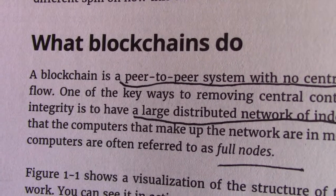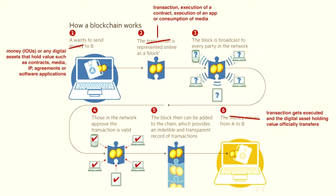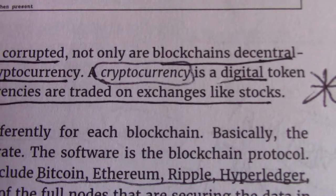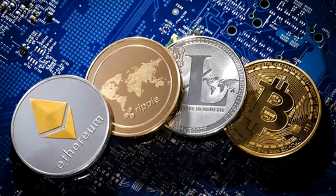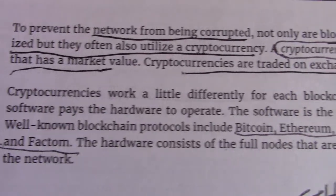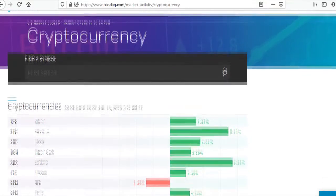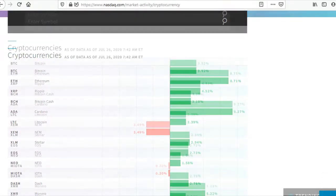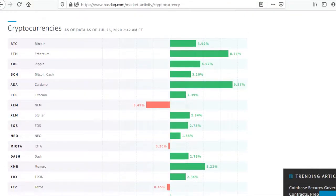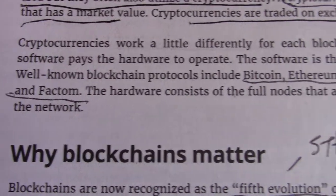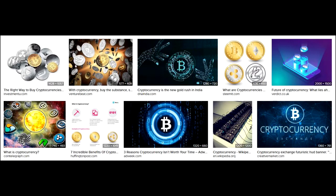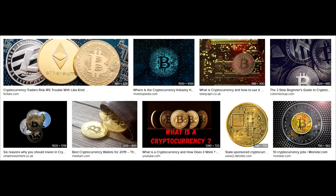What blockchains do. A blockchain is a peer-to-peer system with no central authority — that's very important. A cryptocurrency is a digital token that has a market value. Cryptocurrencies are traded on exchanges like stocks. Well-known blockchain protocols include Bitcoin, Ethereum, Ripple, Hyperledger, and Factom.